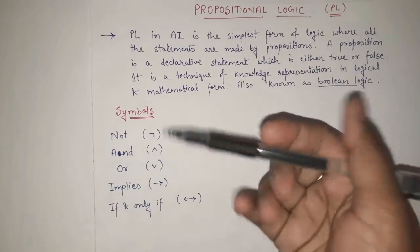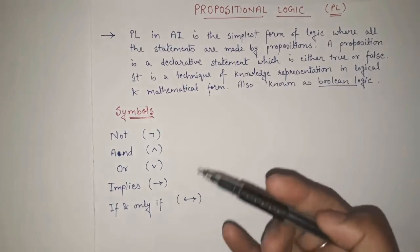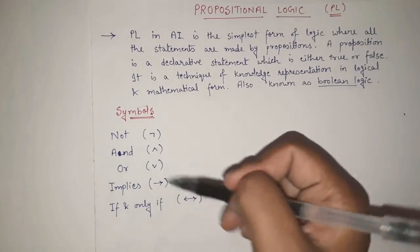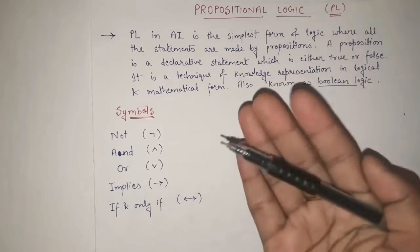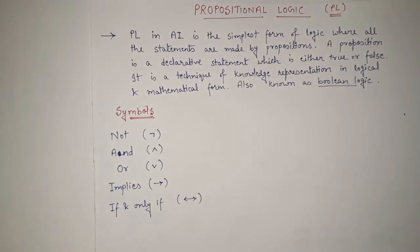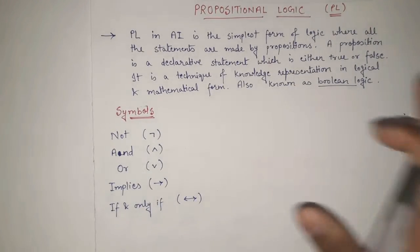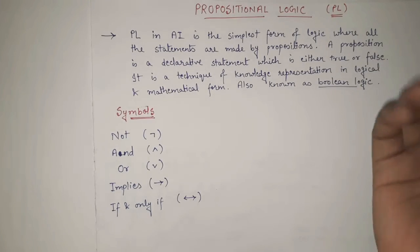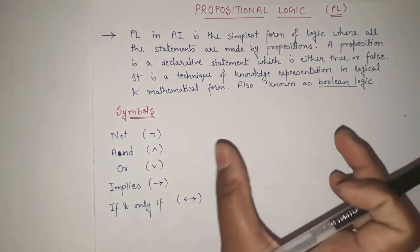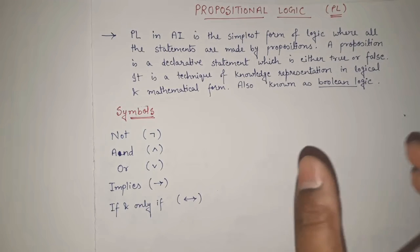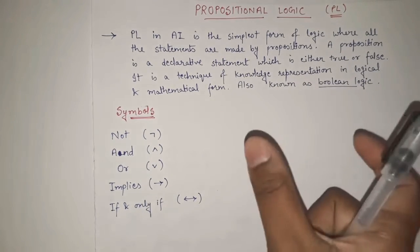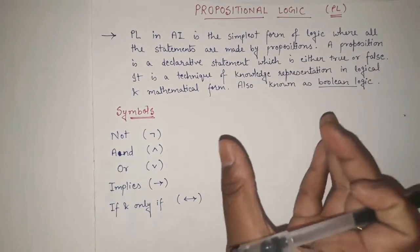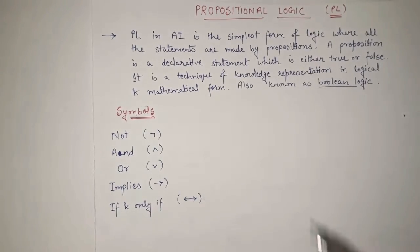What happens is that we have some English language statements and we convert them into logical form with the help of these symbols. After evaluating those statements in logical form, we can ultimately say whether the statement is true or false. In this approach, we have small simple statements and we represent each statement using a symbol like A, B, C, and then we logically connect those statements using the propositional symbols.